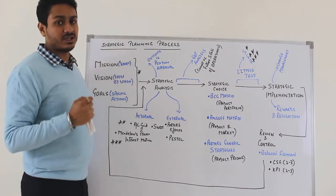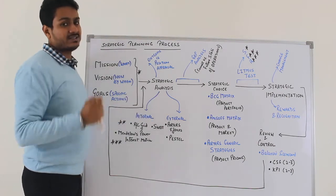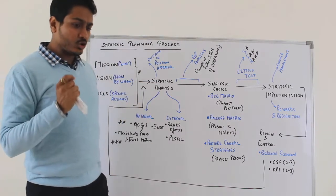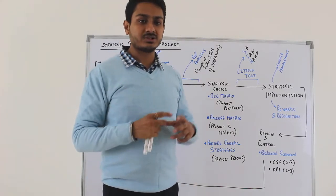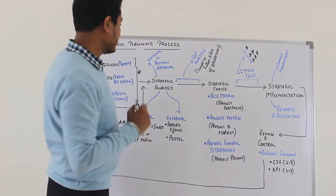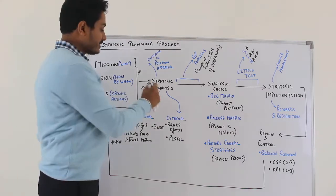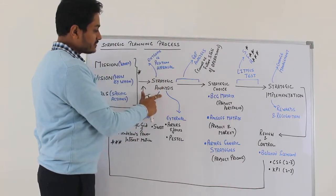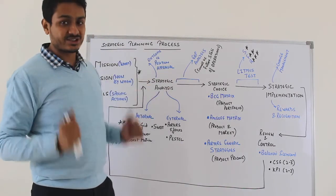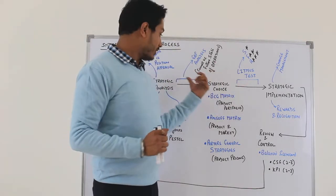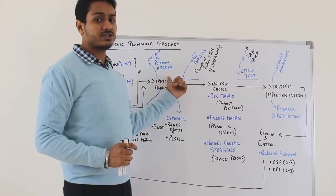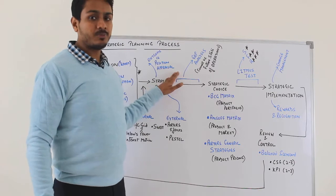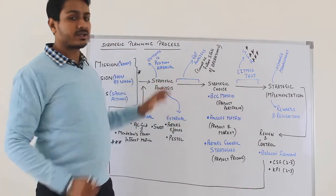When we understand these three elements — mission, vision, and goals — that is when we begin the strategic planning process. Any process begins with what we refer to as analysis; because we're talking about a strategic planning process, we call it strategic analysis. The outcome of the strategic analysis phase would be the position appraisal of the organization. Once we complete strategic analysis, we would have a clear understanding of our organization with respect to customers, competitors, and the market as a whole — knowing our current market standing.